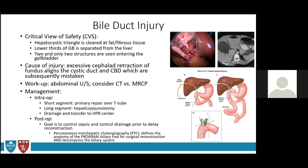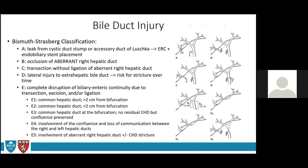Bile duct injury is classified by the Bismuth-Strasberg classification. Type A leak — from the cystic duct stump or duct of Luschka — is treated with ERCP and stent placement to facilitate biliary drainage through the CBD. Type B is an occlusion of an aberrant right hepatic duct. Type C is transection without ligation of that aberrant duct. Type D is a lateral injury to a major duct. Type E is complete disruption of biliary-enteric continuity. Most types B through E require hepaticojejunostomy or bringing both ducts down with single or double anastomosis.